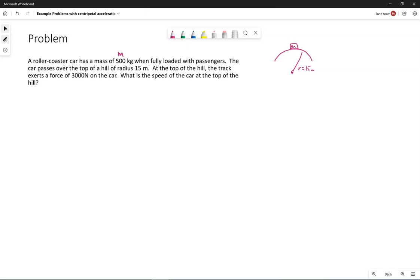At the top, the track exerts a force of 300 newtons on the car. That's the normal force. We want to know the speed at the top of the hill.